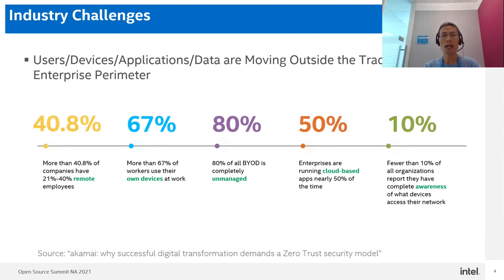With the epidemic, more employees are working from home. As a result, more users, devices, application services, and data are moving from the traditional enterprise perimeter to different locations such as the edge, home, etc. More than 50% of companies have more employees working at home and remotely.